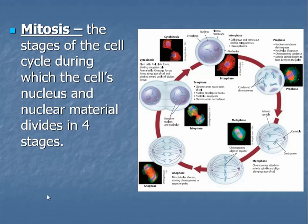Mitosis — we did briefly discuss it when we talked about the cell cycle because it is technically the M phase of the cell cycle. It's the stage of the cell cycle during which the cell's nucleus and nuclear material divide in four stages. Now we're going to go through each one of these individually.